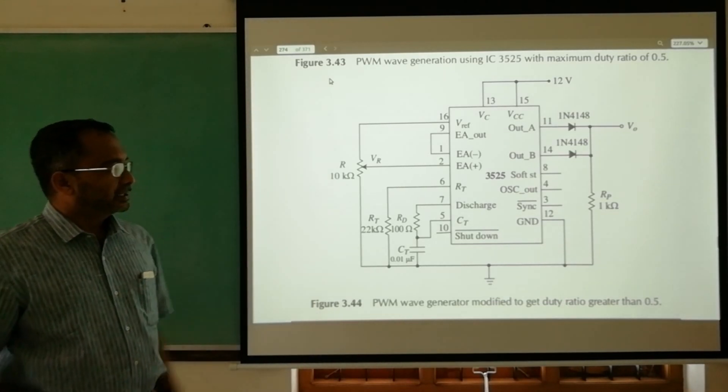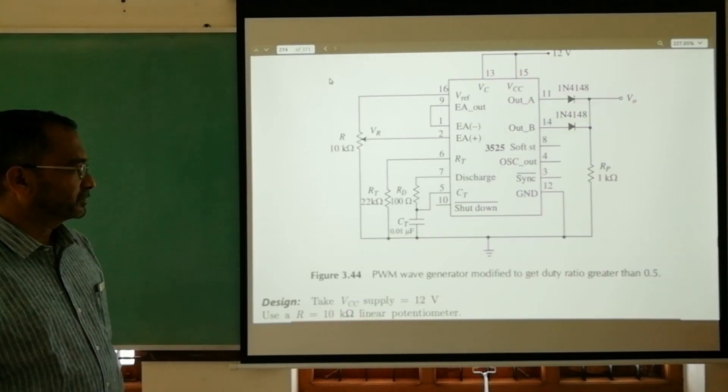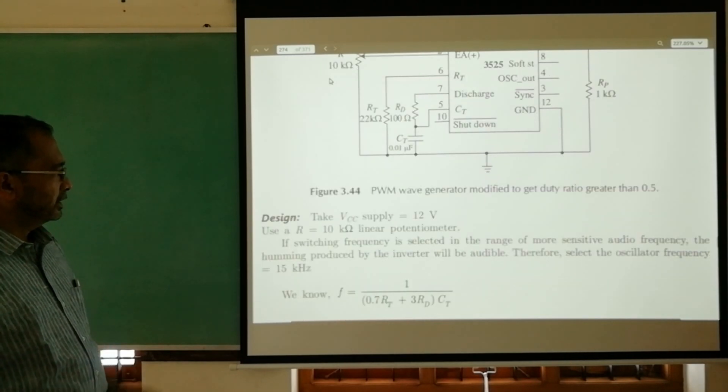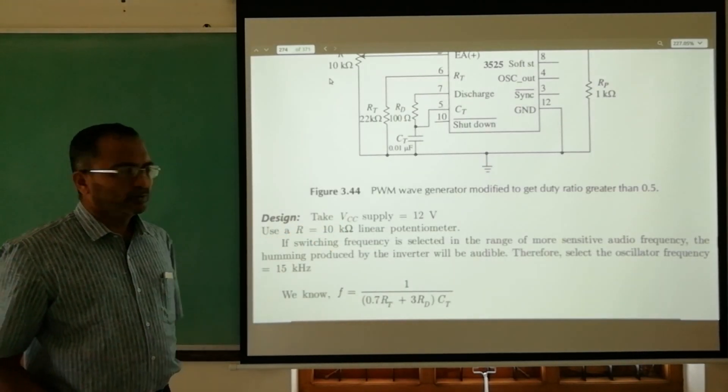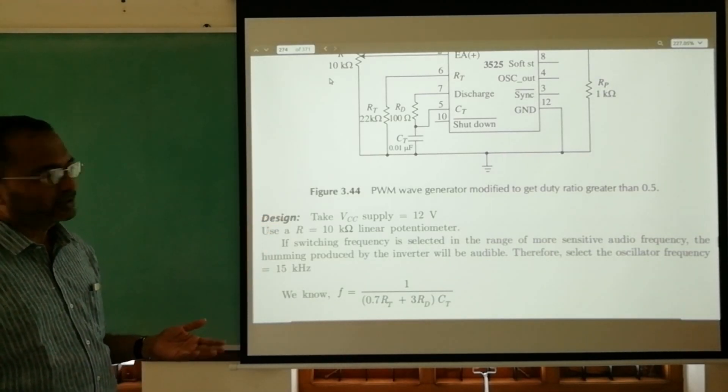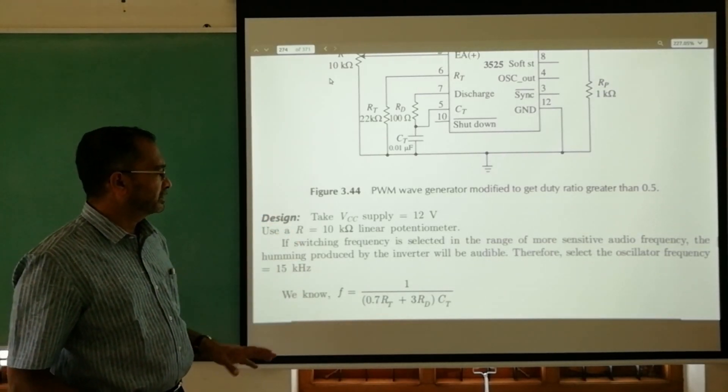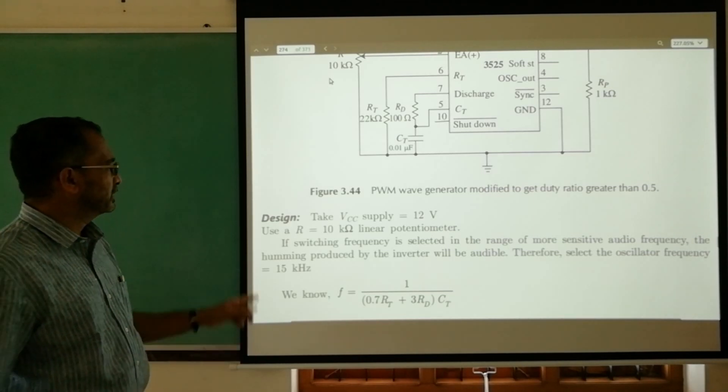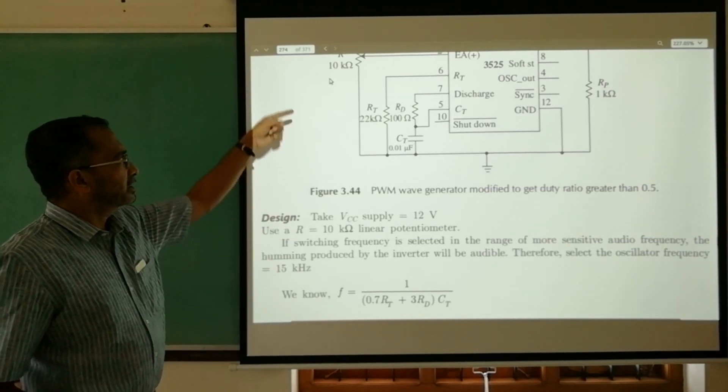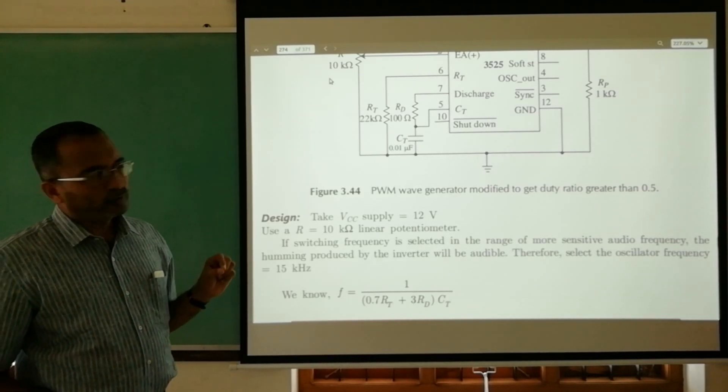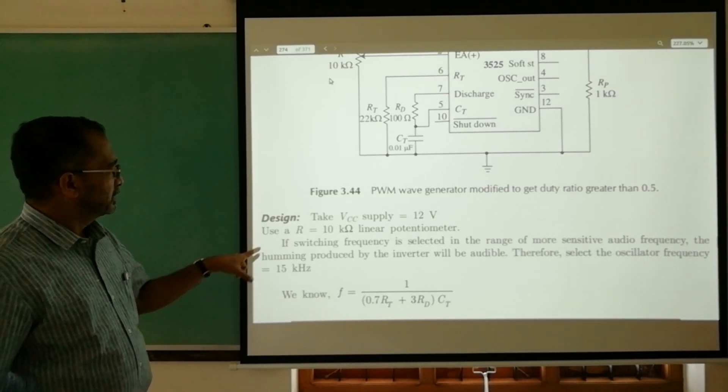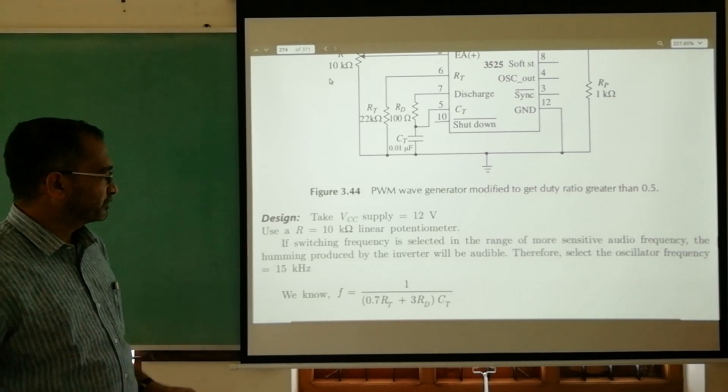The design aspect: we assume a voltage of 12 volt because maximum is 35 volt, so we can select something between 8 volt and 35 volt. The resistance to vary the input voltage given to pin number two is taken as a 10 kilo ohm linear potentiometer.